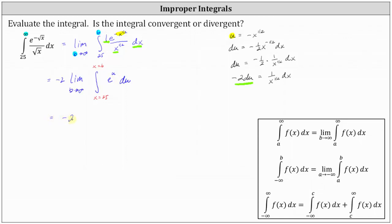This gives us negative two times the limit as b approaches infinity. The antiderivative of e to the u is e to the u, which with respect to x is e to the power of negative x to the power of one half. The limits of integration for x are from 25 to b.